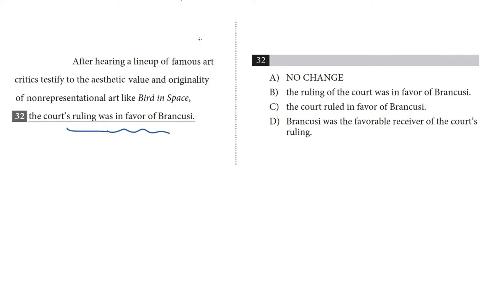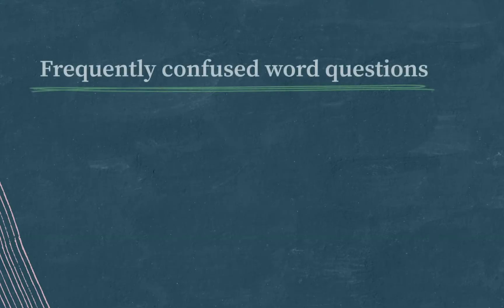After someone heard the testimony of these art critics, this court case was resolved — but who was that someone who did the hearing and made the decision? Everything before this comma is describing the subject of this sentence — in other words, it's pointing to the noun doing the main verb. This is ultimately a question about modifier placement.